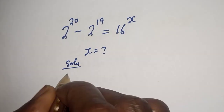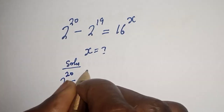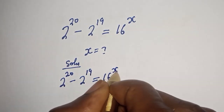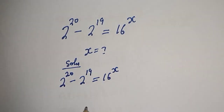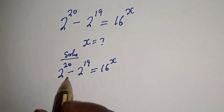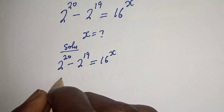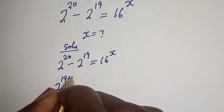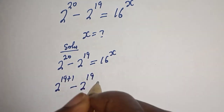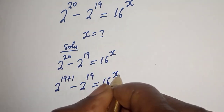We have the given equation: 2 raised to power 20 minus 2 raised to power 19 is equal to 16 raised to power x. Here is 2 raised to power 20, and here is 2 raised to power 19. We can write 2 raised to power 20 as 2 raised to power 19 plus 1, minus 2 raised to power 19, is equal to 16 raised to power x.